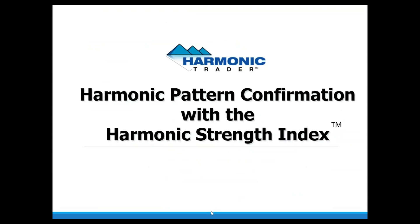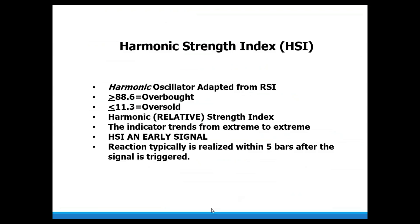Harmonic pattern confirmation with the Harmonic Strength Index. The HSI is a proprietary harmonic indicator adapted from the Relative Strength Index with different price parameters and adjustments that include harmonic ratios in the formula. We look at overbought levels above the 88.6 area and oversold levels below 11.3. Similar to RSI, we look for the indicator to move from one extreme to the next, but HSI is an early signal — we look for that reaction within five bars after it has been triggered.